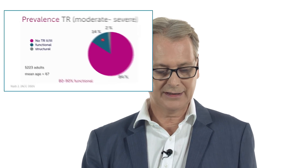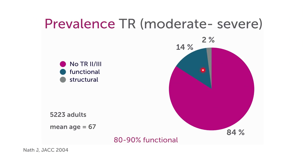As you can see in this diagram, we have not only a high degree of tricuspid regurgitation in the general population, but most patients who have tricuspid regurgitation have functional as opposed to structural TR.